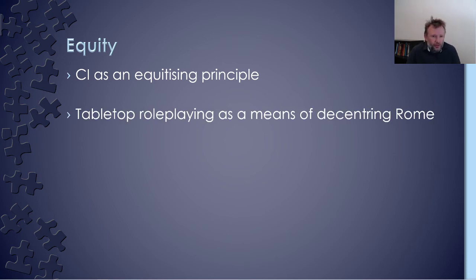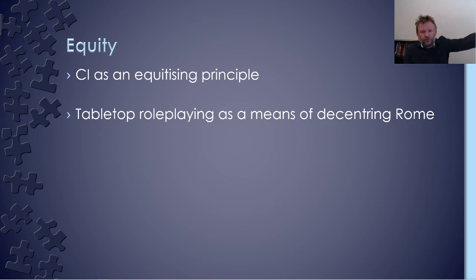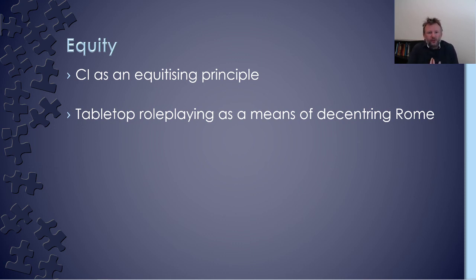Secondly, tabletop role-playing can act as a means of decentering Rome. Anyone who's worked with traditional Latin teaching materials knows they centre very clearly the story of elite Roman males, with problematic depictions of gender, ethnicity and race, sexuality, and slavery. What if our students can't see themselves in the materials they are presented with? What if they want to learn something other than Cicero, or be exposed to the breadth of post-Antique Latin, or tell stories about the future, an alternate history, or an alternate reality? Tabletop role-playing is only limited by our imaginations — it provides an opportunity for participants to place themselves in a world in a character they choose, an identity they are choosing to explore, not bound by the historical realities and problems of ancient Rome.